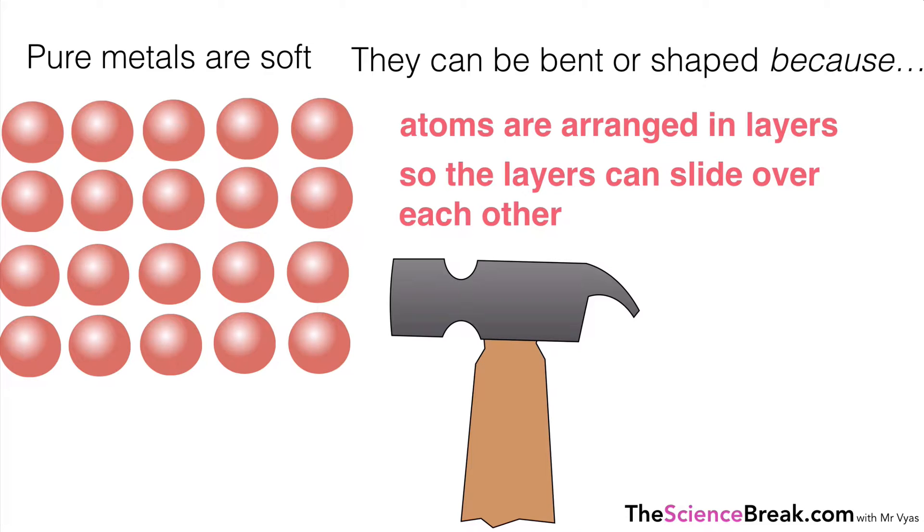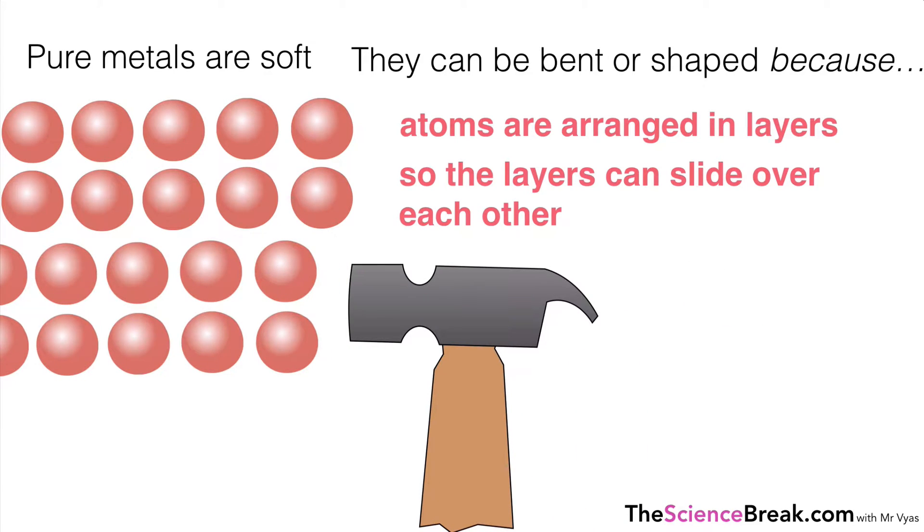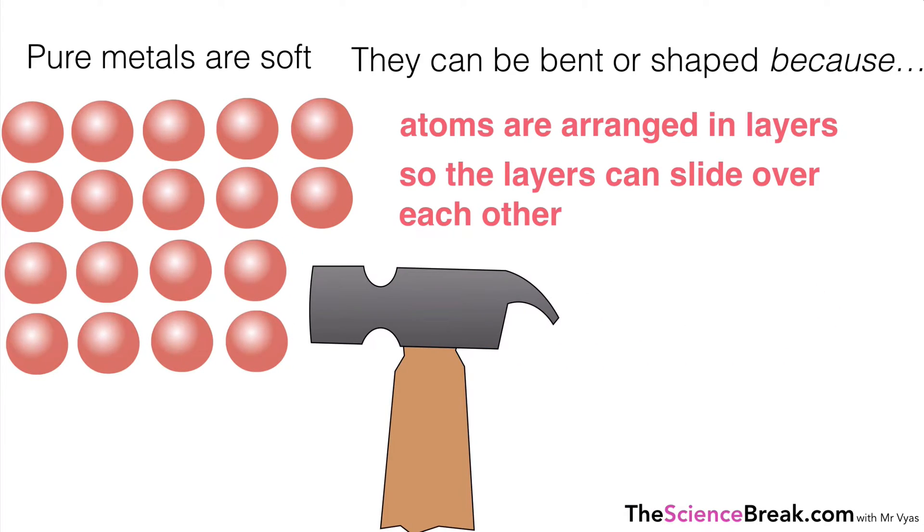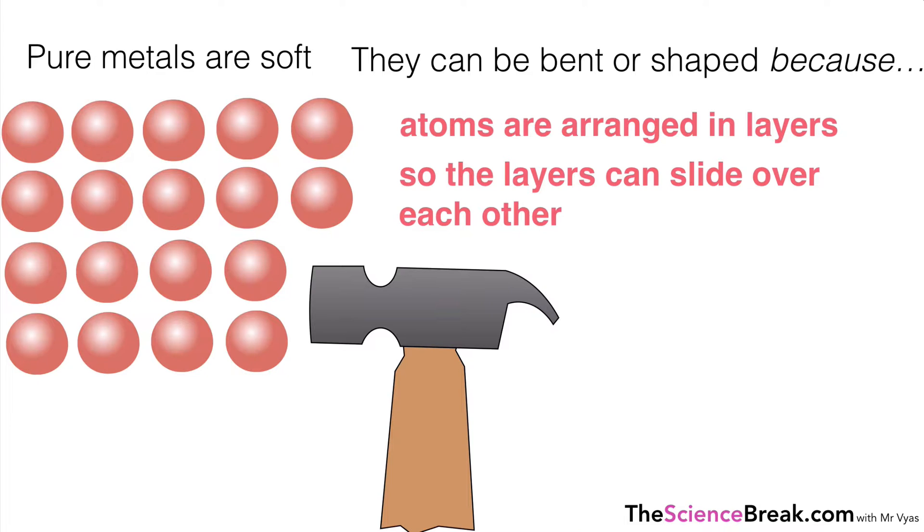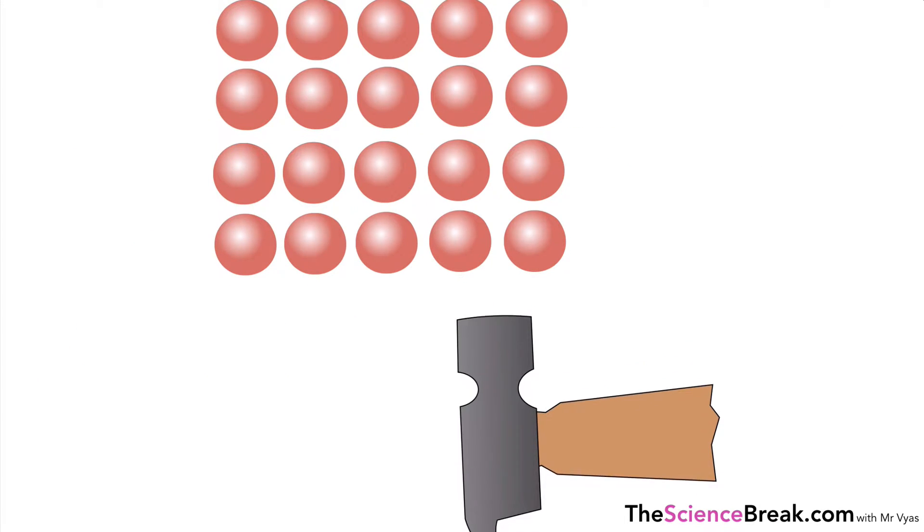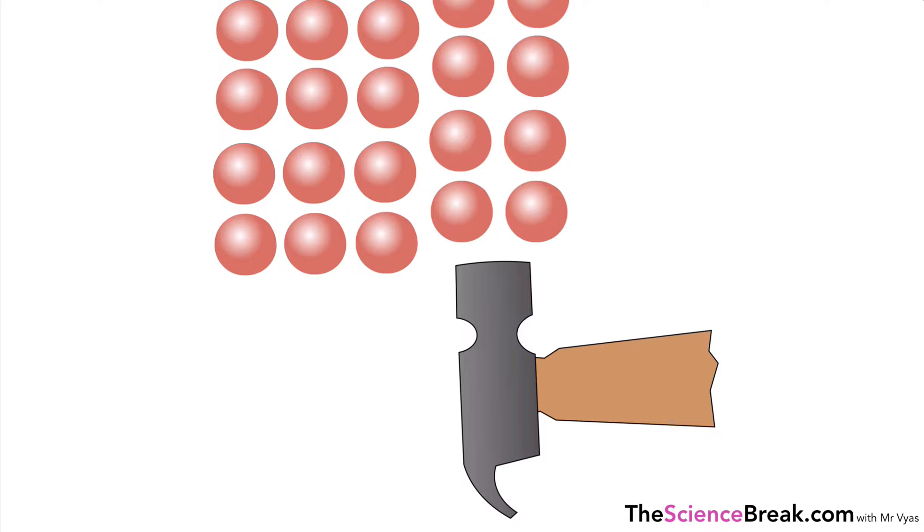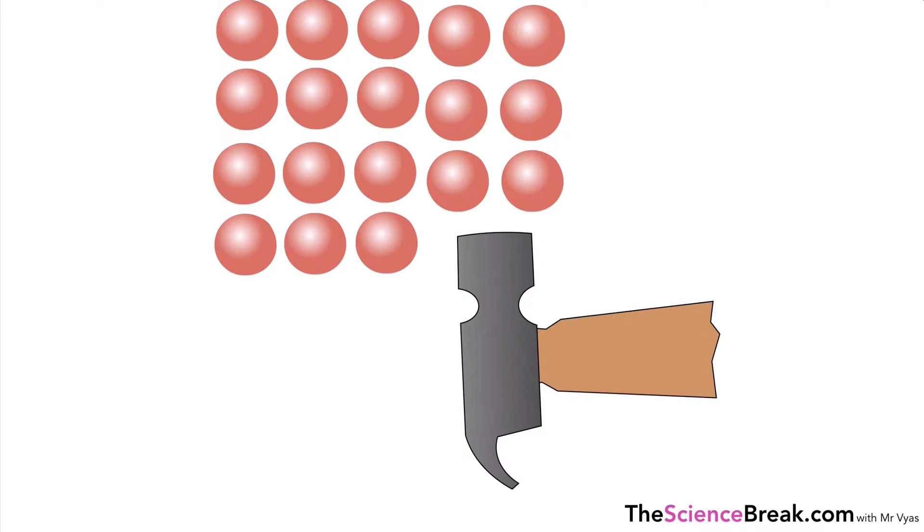So that means that if we were to use a hammer on a pure metal, we could give it a bang and that would then allow it to change shape but not just along in that direction there. We can also bang it in a different direction and in a similar way this metal could be hammered or bent into shape.